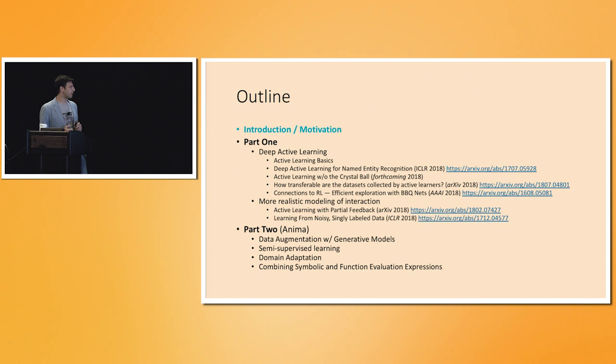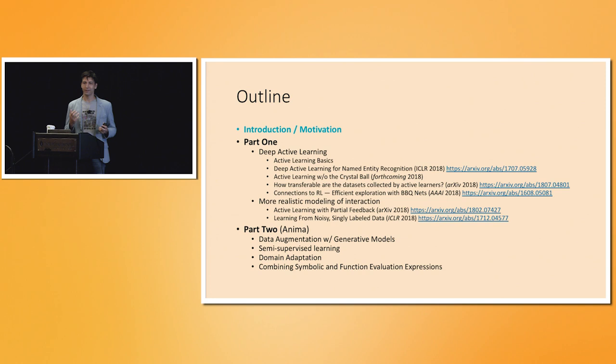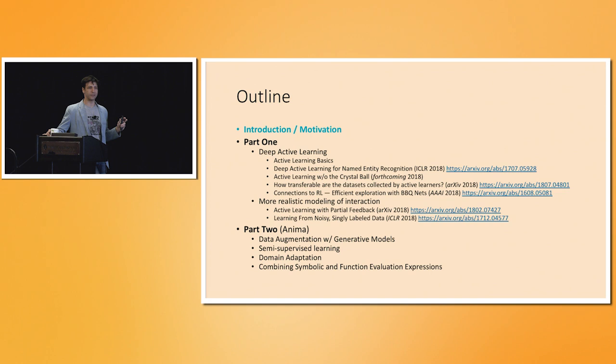I'll discuss first some basic proof-of-concept work trying to determine what are good acquisition functions and does this work, and on what tasks. I'll describe some empirical work to see how much we can rely on these tools. Then in the second part, I'll describe a couple of papers that look more realistically at the labeling process.